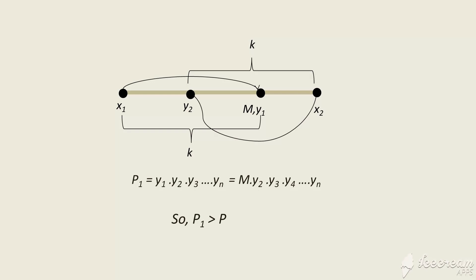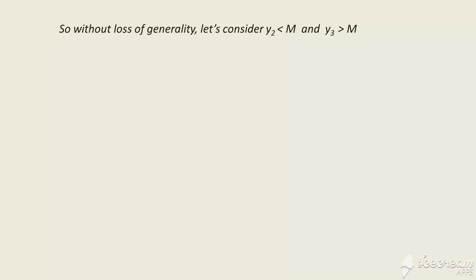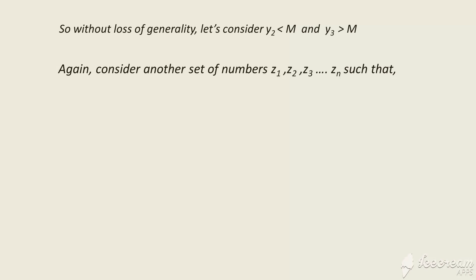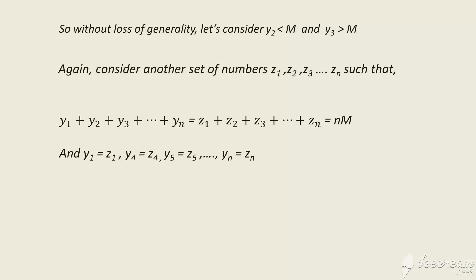Without loss of generality, let's consider y₂ < M and y₃ > M. We consider another set of numbers z₁, z₂, z₃, …, zₙ such that y₁ + y₂ + … + yₙ = z₁ + z₂ + … + zₙ, with y₁ = z₁ = M, y₄ = z₄, y₅ = z₅, …, yₙ = zₙ.